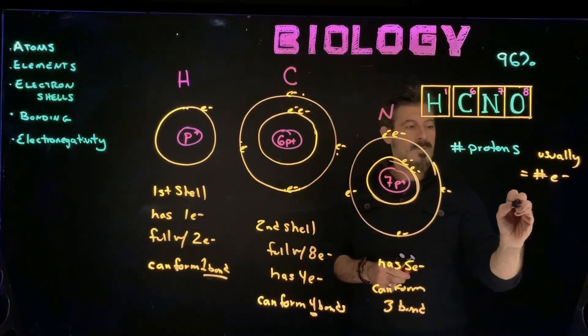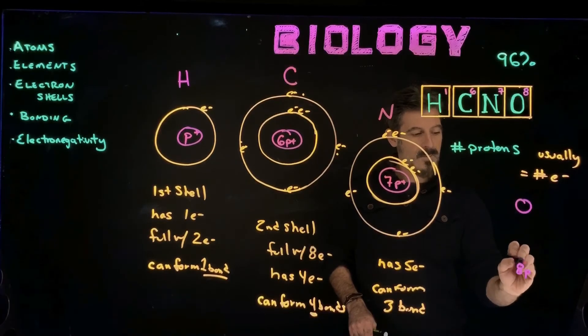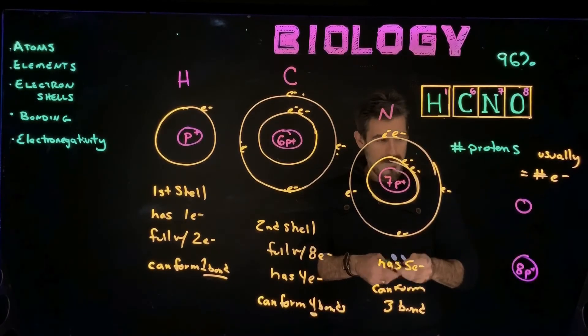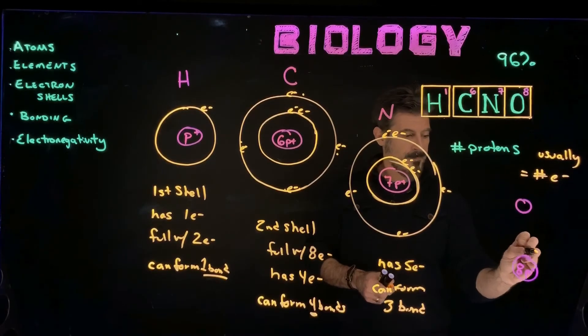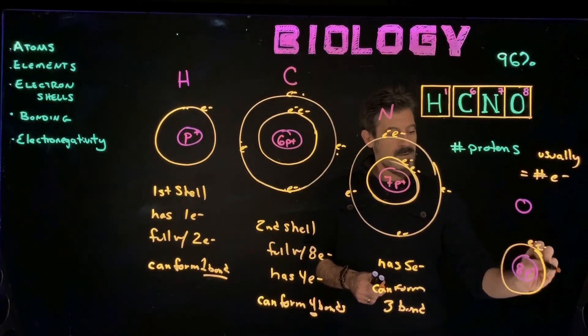Oxygen has its eight protons and eight neutrons also, but we're just not putting them in. Two electrons in its first shell.